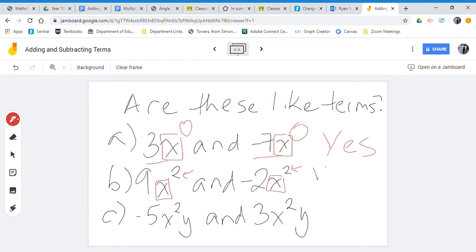Next, see, are these like terms? You notice I'm not looking at the coefficients in front of our pronumerals. They aren't what determines if something's a like term. It's only by looking at the powers and the pronumerals.